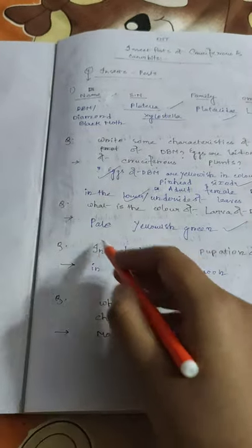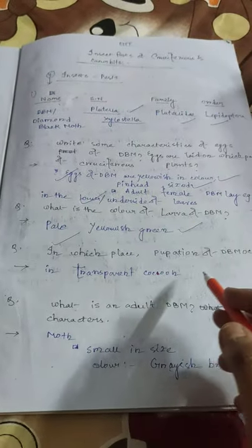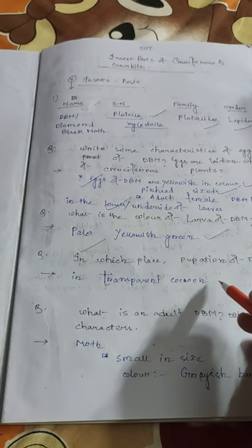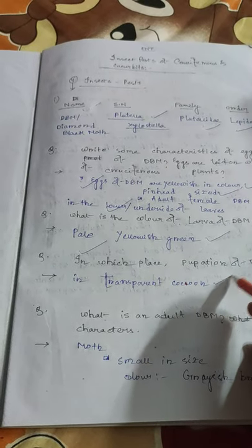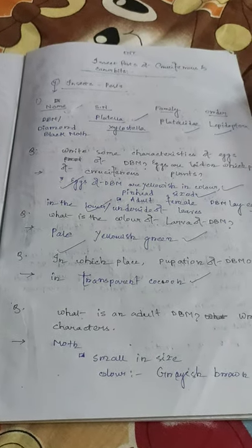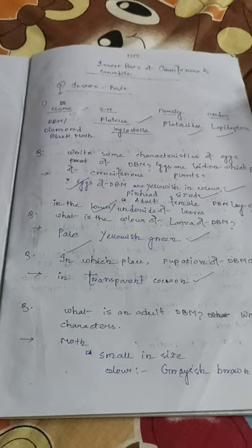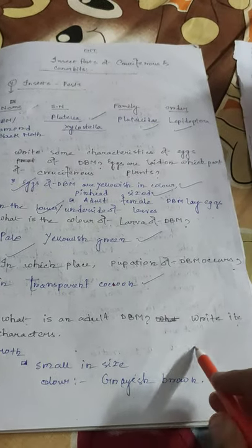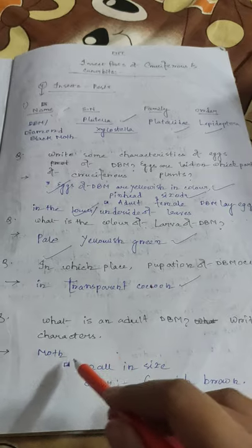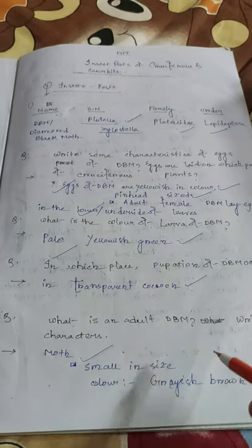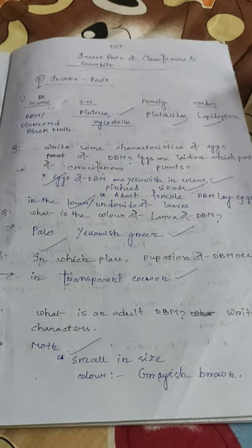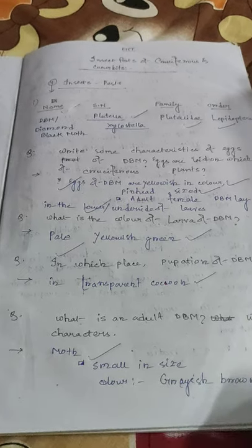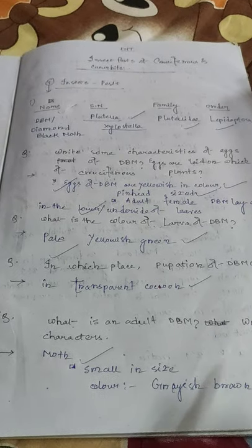The larva of Diamond Black Moth is pale yellowish green in color. Pupation occurs in a transparent cocoon. The adult DBM is a small moth, grayish brown in color.